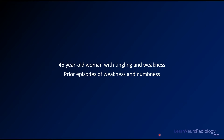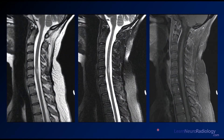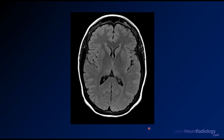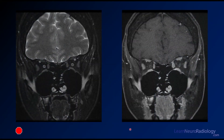Moving on to our next case — a 45-year-old woman with tingling and weakness, prior episodes of weakness and numbness, so a very similar history to what we already saw. We have some images from the spine: a cervical spine T2, a T2 fat-sat or STIR image, and a post-contrast image with fat saturation. Here we have axial images through the central portion. Maybe you see something a little funny about the spinal cord. There's also an image from the brain — a FLAIR image that looks pretty normal. And here are some images through the orbits where you can get a look at the optic nerves.